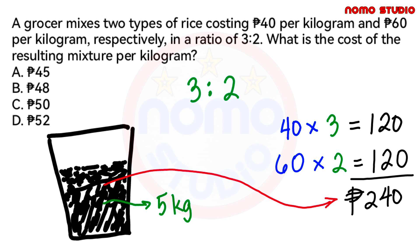At ang next step naman natin is to divide this by the total number of kilograms in a mixture. At alam natin na ang total weight of the mixture is 5 kilograms. Kasi nga may 3 kilograms na first type of rice at may 2 kilograms na second type of rice. So it means 240 divided by 5 and it gives us 48. So the cost of the resulting mixture per kilogram is simply 48 pesos. And the correct answer is letter B.